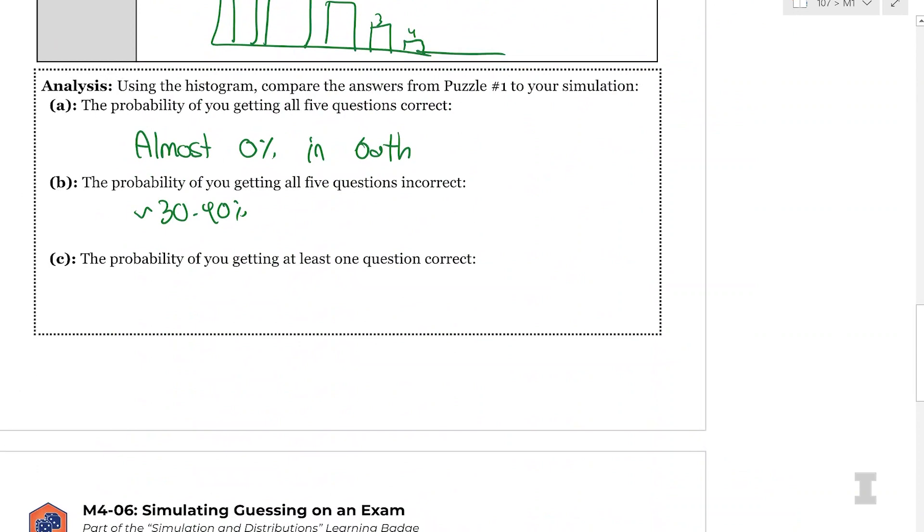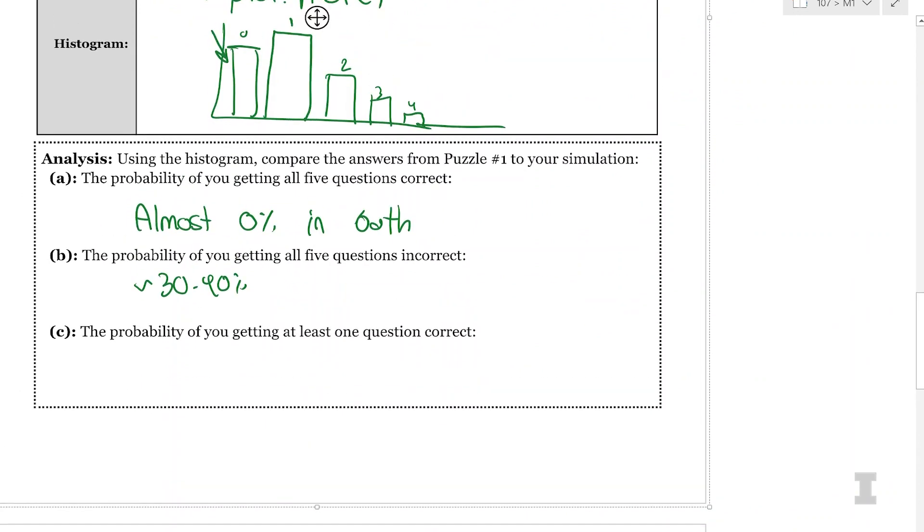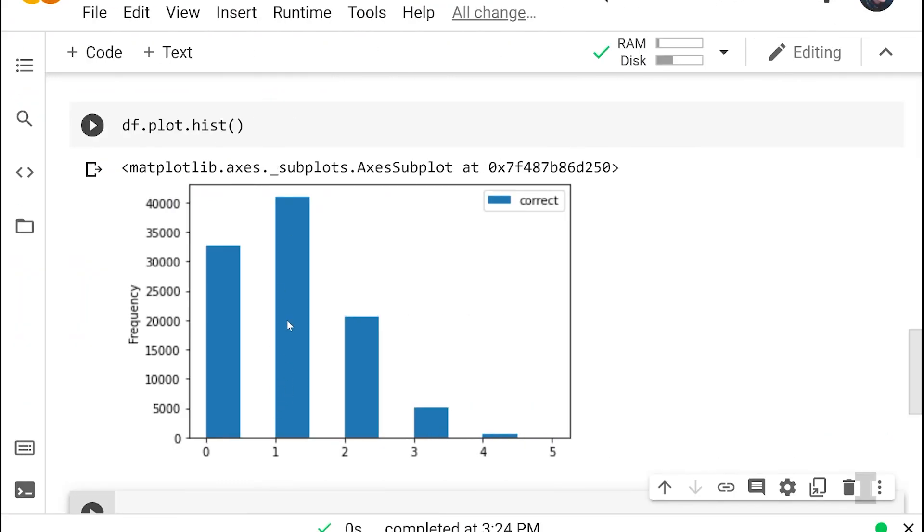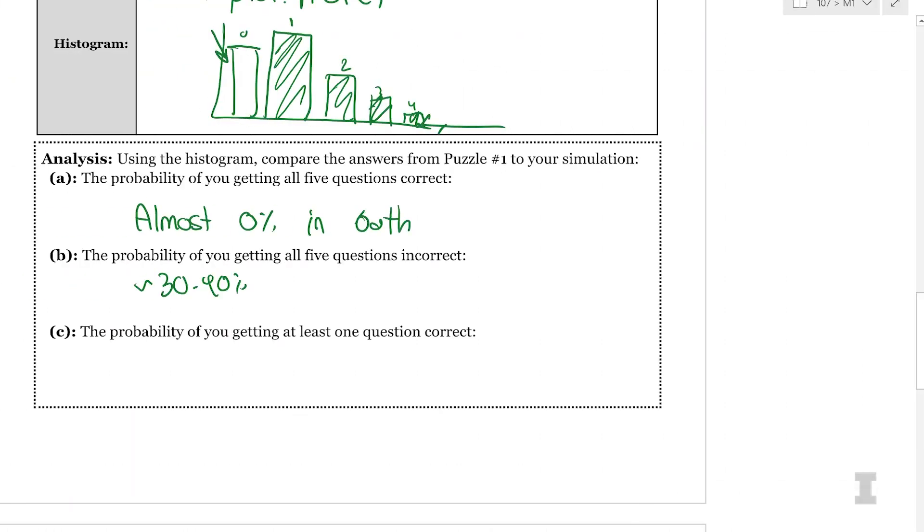And what's the probability of you getting at least one question correct? At least one question correct is everything else. So that's the bars for 1, 2, 3, 4, and 5. So that's just going to be 1 minus that 33-ish percent. So it's everything but that zero bar. So that's going to be about 70%-ish. So we see that the analysis we did in the beginning just using real statistics and then writing a simulation, a somewhat complicated simulation, and doing the analysis looking at histogram, we get the exact same results.